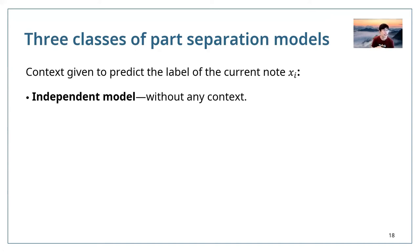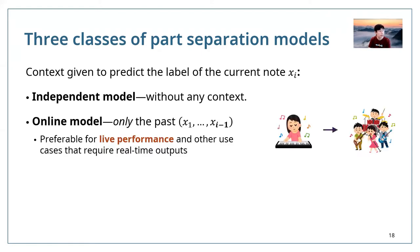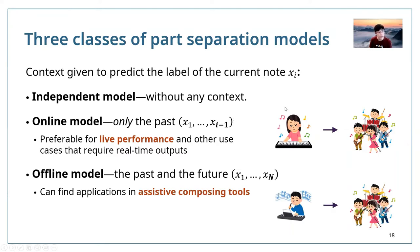There are three classes of part separation models in terms of context available for predicting the label for the current note xi. The independent model predicts without any context. The online model uses only past information from x1 to xi-1 — preferable for live performance requiring real-time output. The offline model uses both past and future information, suitable for assistive composing tools where we can look into the future to decide what instruments to use.